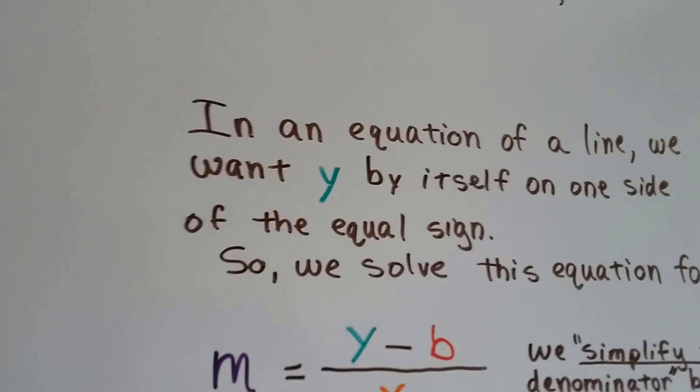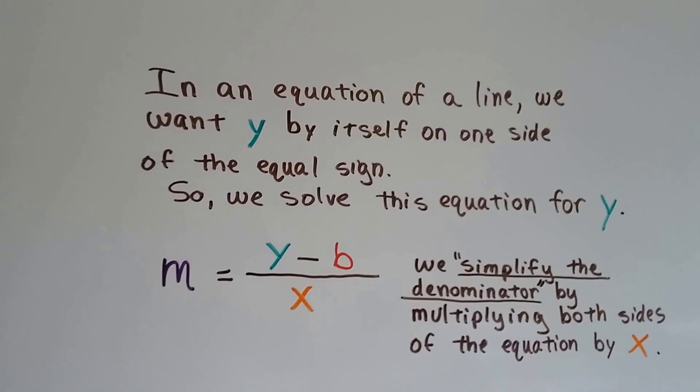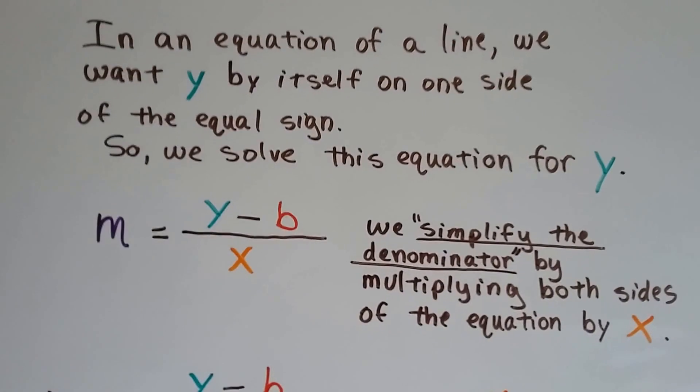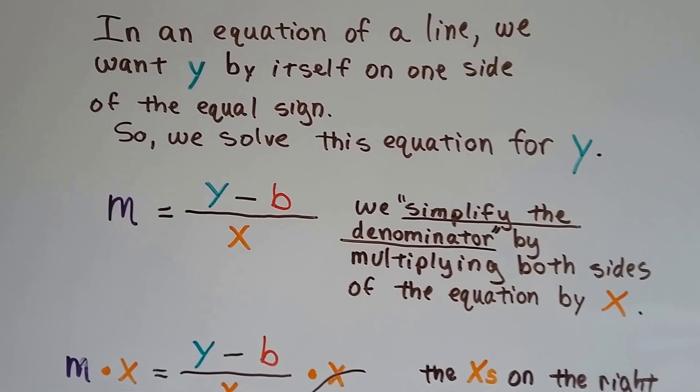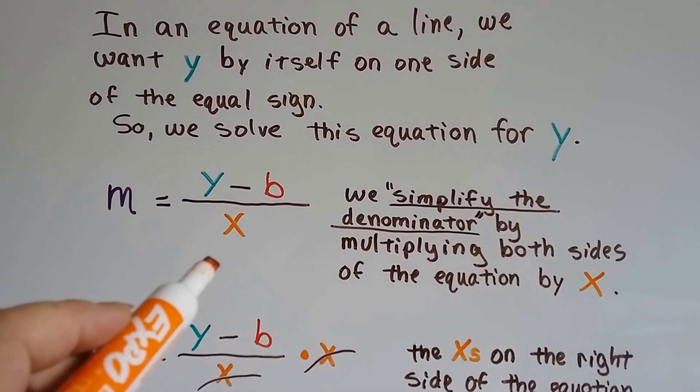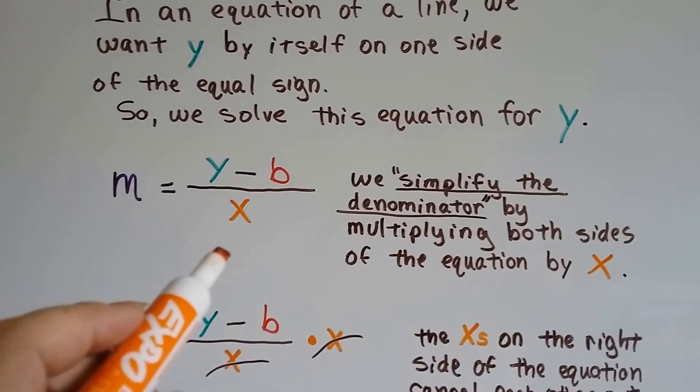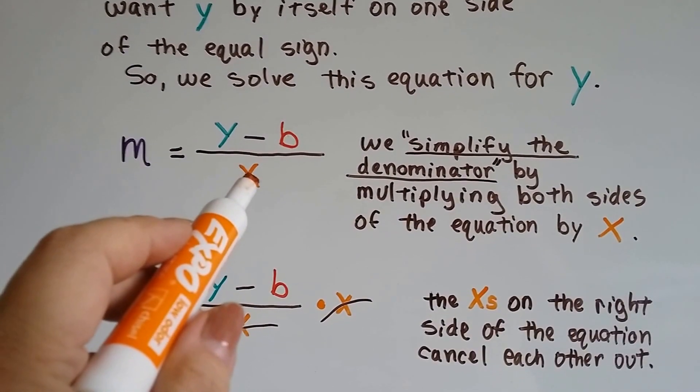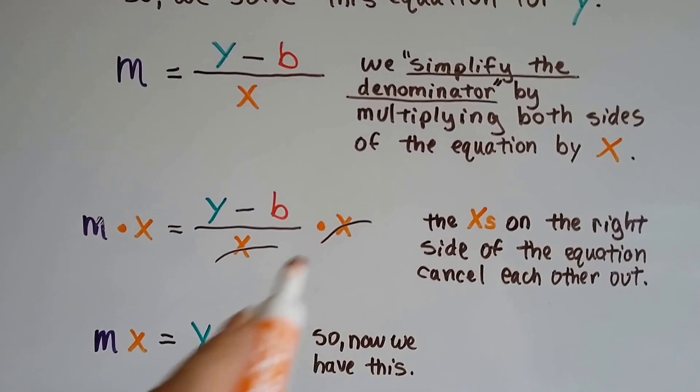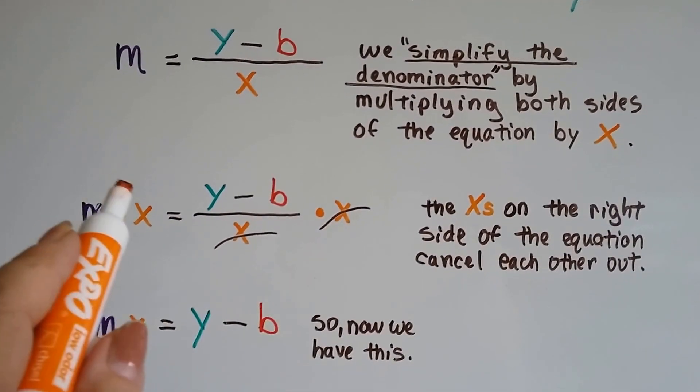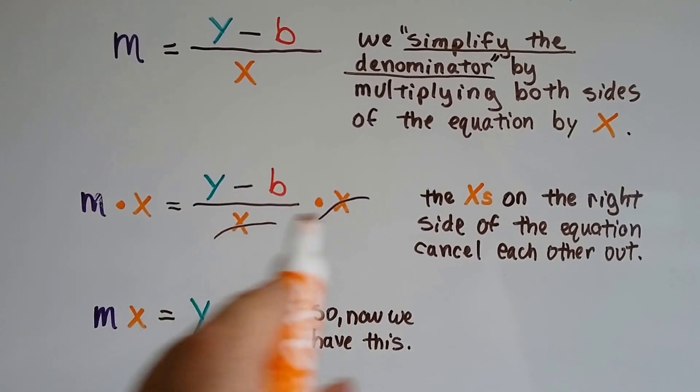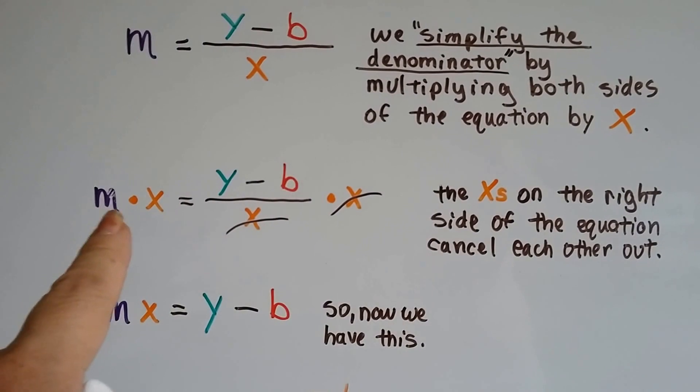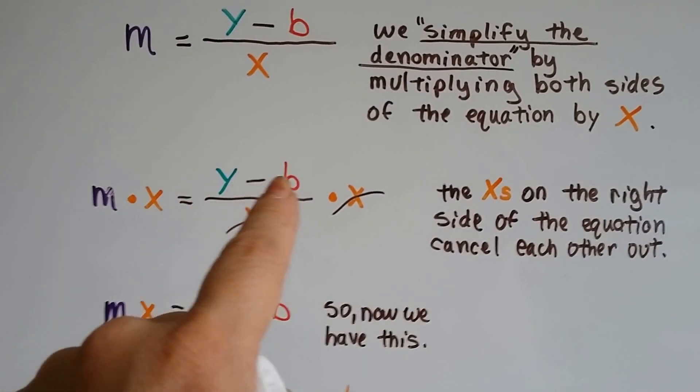In an equation of a line, we want y by itself on one side of the equal sign. So we solve this equation for y, just like we did in the past. We simplify the denominator by multiplying both sides of the equation by x. Because we need to do the inverse of division to get rid of this x. So we multiply both sides by x, and these two x's on the right side cancel each other out.